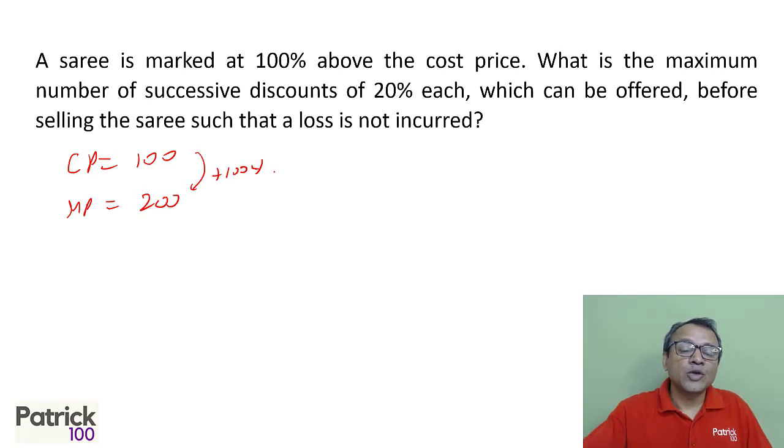Now, you keep on giving 20 percent. 20 percent of 200 is 40. 10 percent is 20, 20 percent is 40, gives 160. Again, 20 percent is 32. You get 128. 10 percent is 16, so 20 percent is 32. Here 10 percent is 12.8. So 20 percent is... if you look at it is 12.8. 10 percent, if you look at it is 12.8.